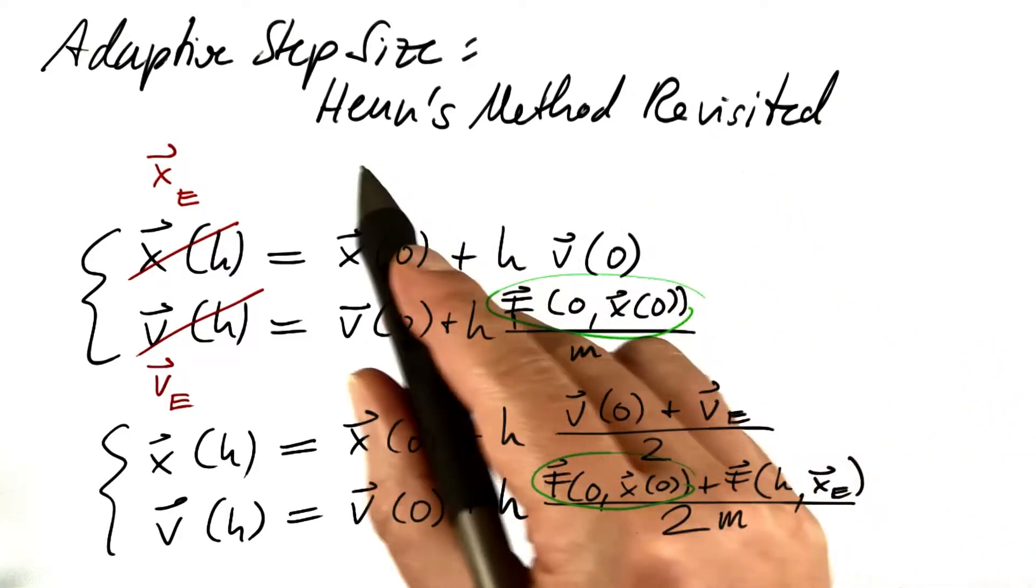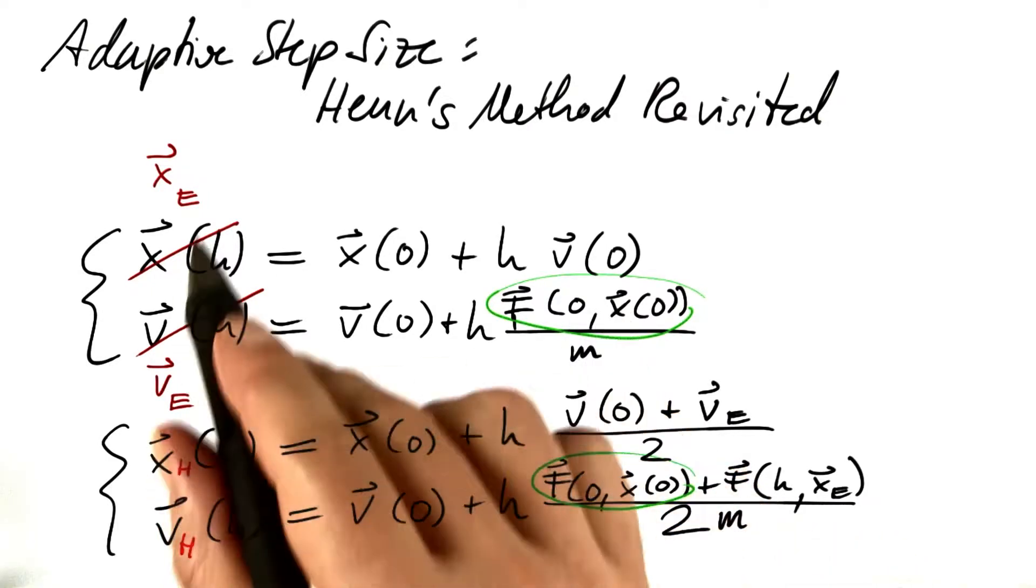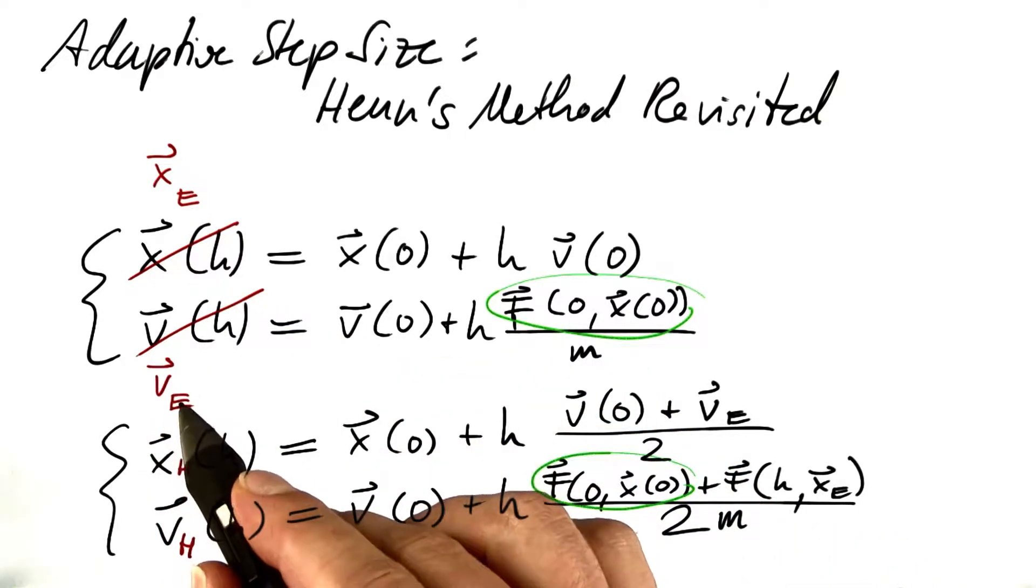There is one additional nice thing about Heun's method. It gives us Heun's estimate for the next step. And in parallel, we get Euler's estimate for free.